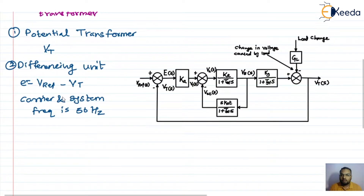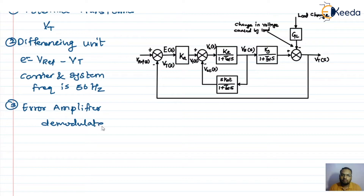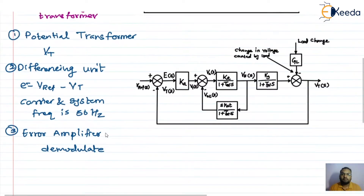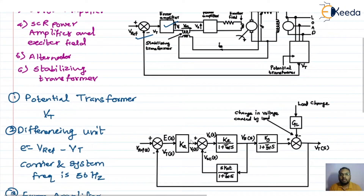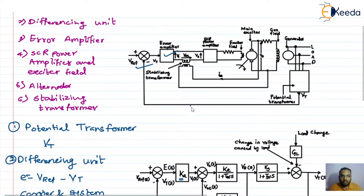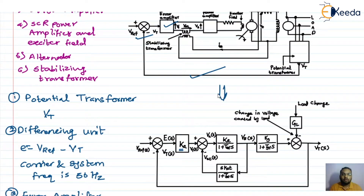The next component is the error amplifier. What this error amplifier does is it demodulates and amplifies the error signal. As shown in the block diagram — which we have already discussed in the previous lecture as the model in the Laplace domain — this error amplifier has a gain equal to K_A.